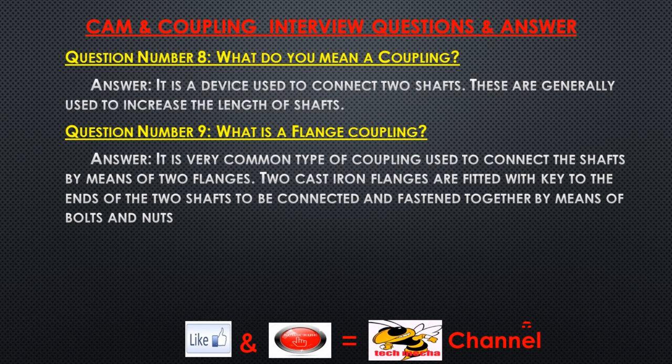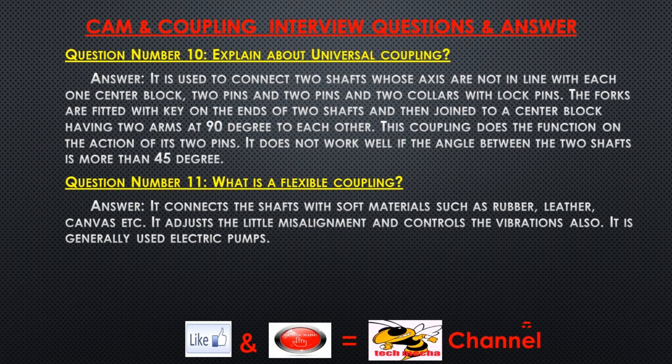Question number nine: What is a flange coupling? Answer: It is a very common type of coupling used to connect shafts by means of two flanges. Two cast iron flanges are fitted with a key to the ends of the two shafts to be connected and fastened together by means of bolts and nuts.